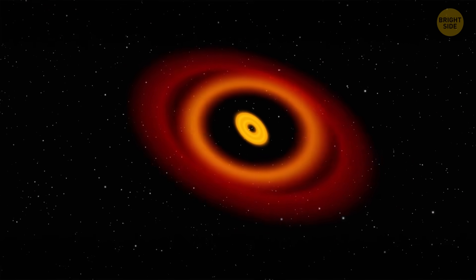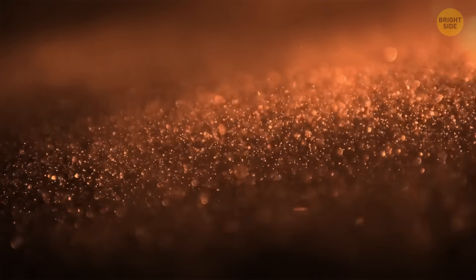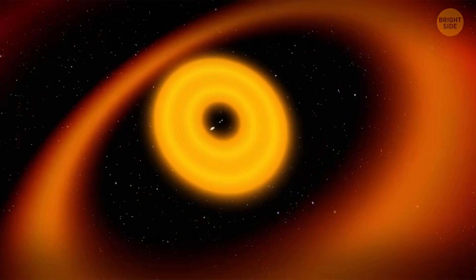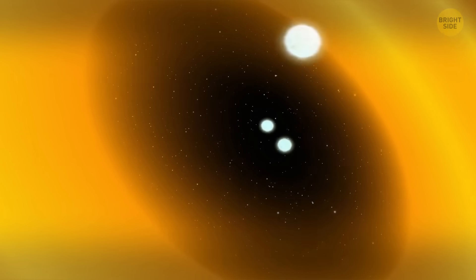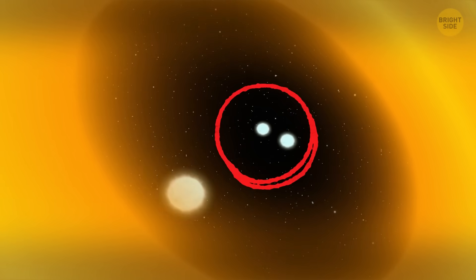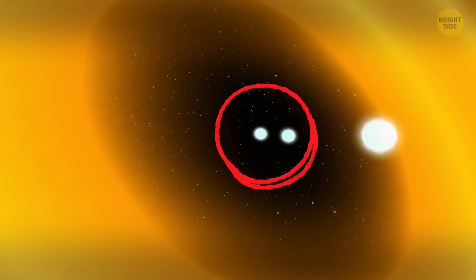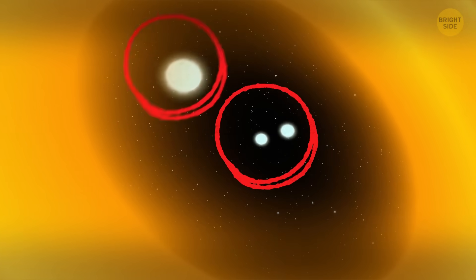It's composed of three orange rings. They're made of dust and nested inside one another. In the center of this system, you can see three stars. Two of these stars are binary, meaning they orbit each other. The third star revolves around them.